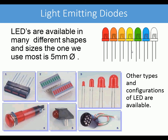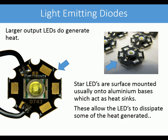LEDs are available in many different sizes. The one we're going to use in our project is a 5mm diameter, but there are other types including LED arrays. Larger output LEDs do generate heat. Here's an example of a star LED surface-mounted onto a piece of aluminium, which acts as a heat sink, allowing the LED to dissipate heat. The heat from an LED is generally concentrated at the back, and this allows it to move away to keep the LED running cooler.